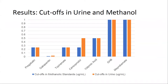This graph shows the cutoff for the drugs in methanol as well as the cutoff for the drugs in fortified urine samples. The cutoffs ranged from 0.025 micrograms per milliliter to 1 microgram per milliliter. The cutoffs were the same in methanol and urine for GHB, meprobamate, valproic acid, topiramate, and pregabalin. The cutoffs in urine were less sensitive for carisoprodol and gabapentin.